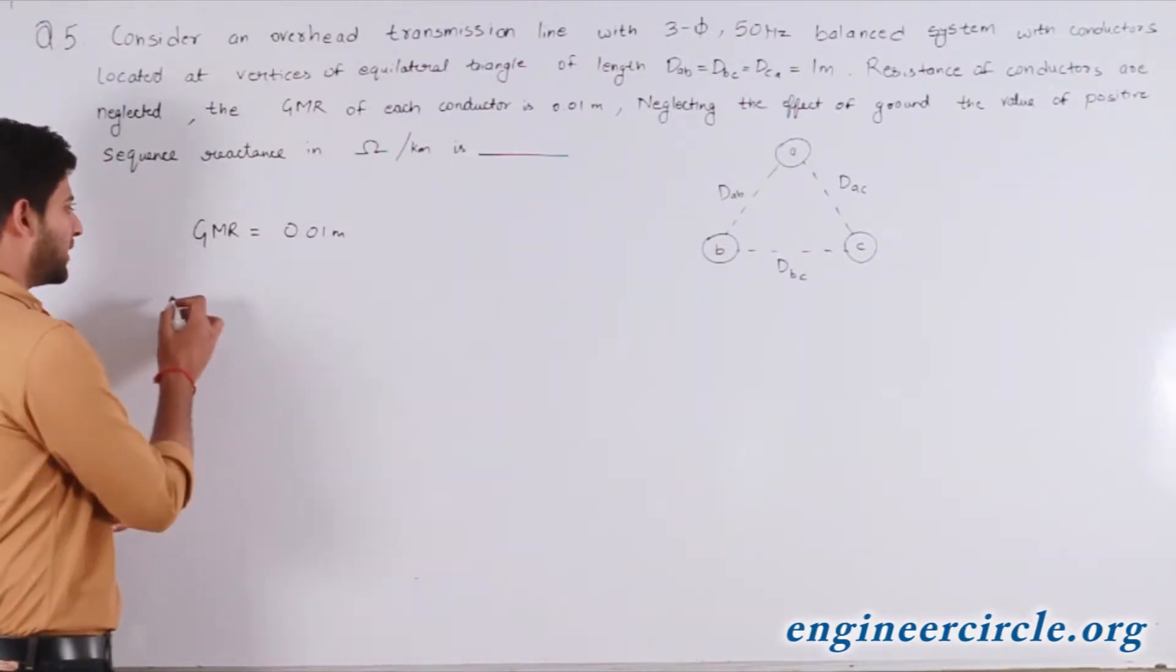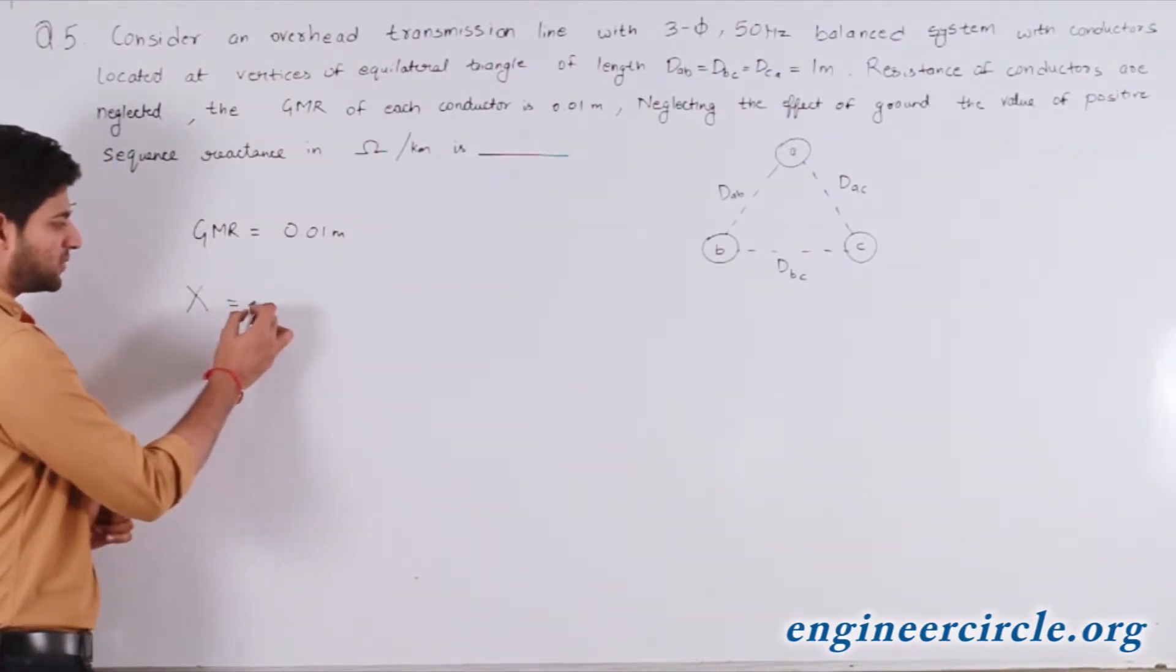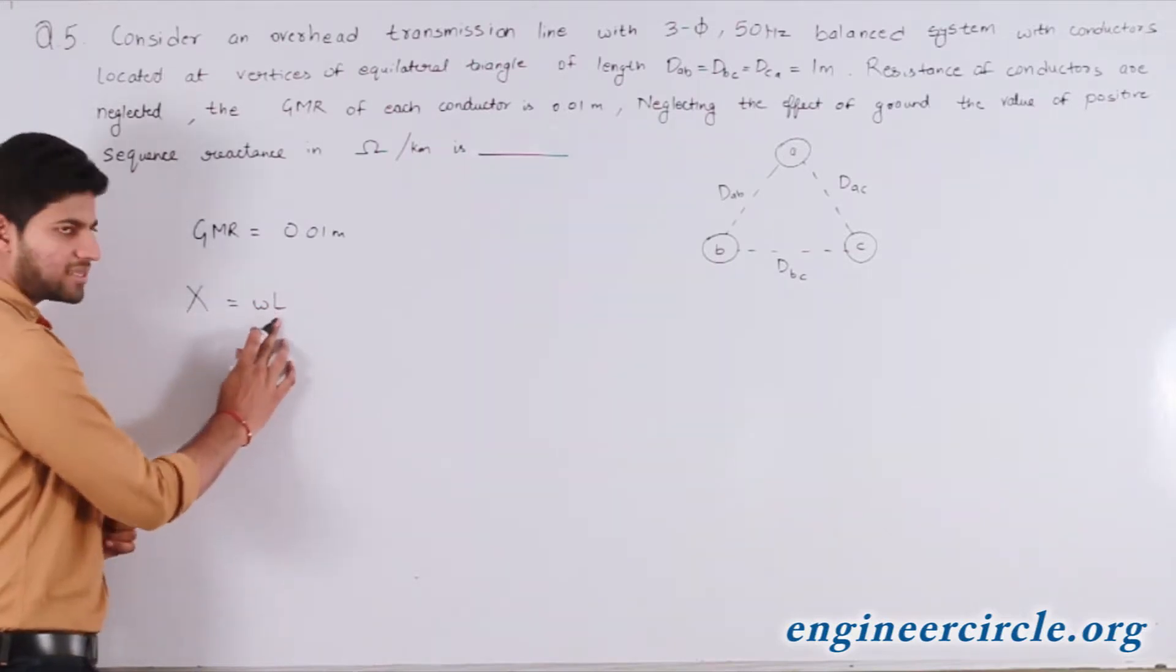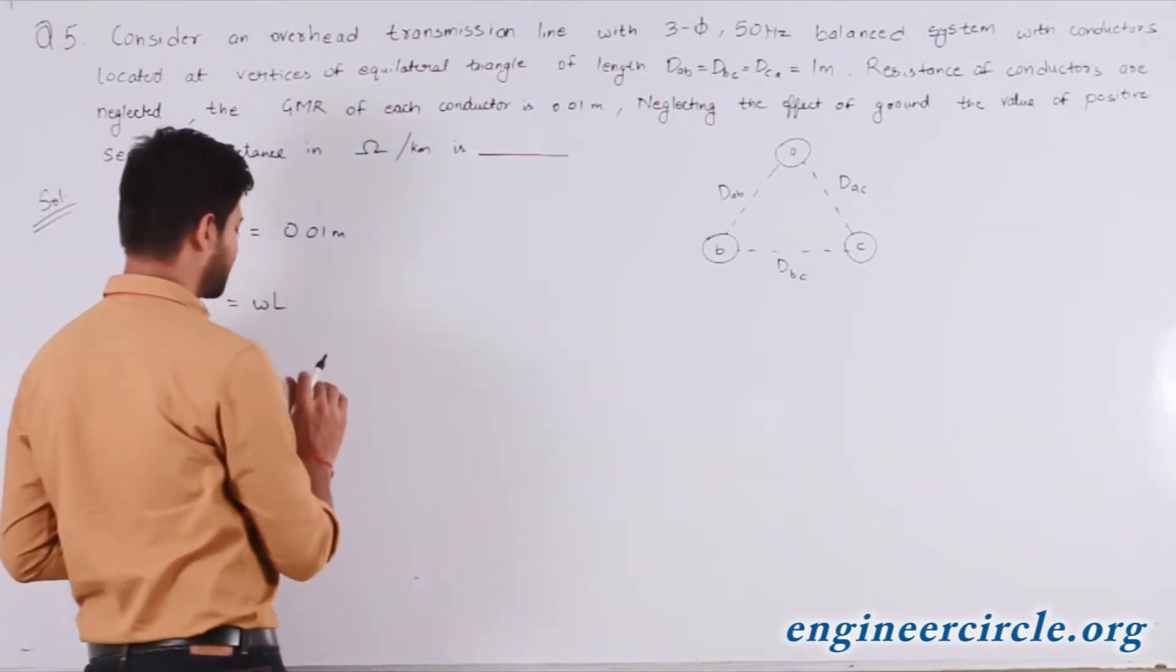Positive sequence reactance is nothing but the value of x which is equal to omega L. This L is the loop inductance or the per phase inductance.